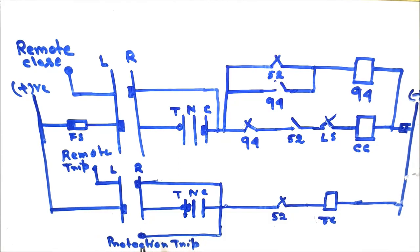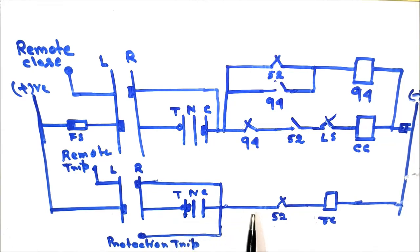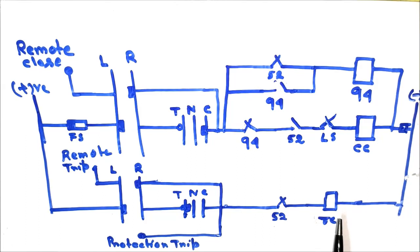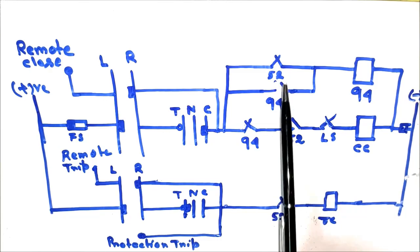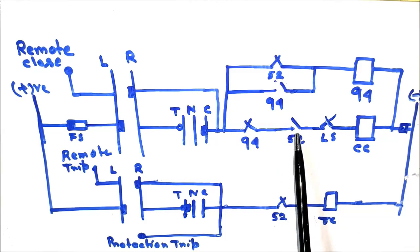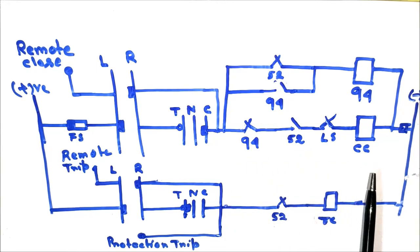For local operation of the circuit breaker tripping: if we give the trip pulse from the TNC switch, the DC pulse will come to the local-remote selector switch contact via the TNC switch contact to the circuit breaker. Since this auxiliary contact is in NC position due to the circuit breaker being in the ON position, 220V DC voltage will drop across the trip coil. As soon as the trip coil receives this voltage, it will energize and by means of the latch-frame mechanism it will trip the circuit breaker. So the auxiliary contacts will change their positions accordingly for the next closing operation of the circuit breaker. This is how the local tripping operation of the circuit breaker is done.